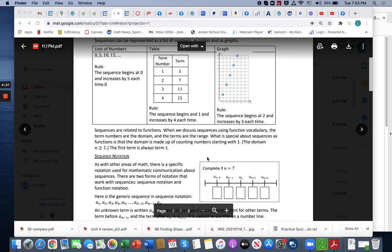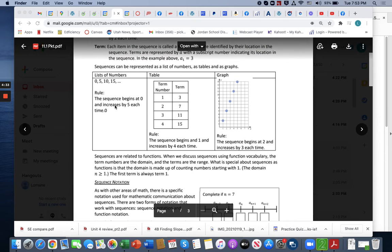So what is special about sequences as functions is that the domain is made up of counting numbers starting with 1. The domain is listed as n is greater than or equal to 1. The first term is always term 1. Over here again, the domain isn't listed even though 1 would be here for the x value. 1 is here for the x value and 1 is here for the x value. And then here would be term 2 is 5. Term 2 is here again, this is the domain, and the term 2 here is also the domain.